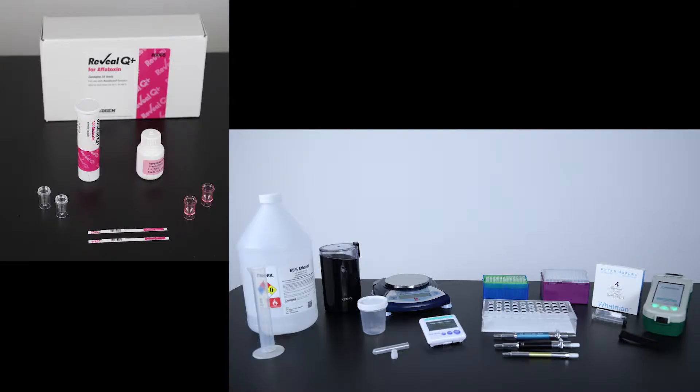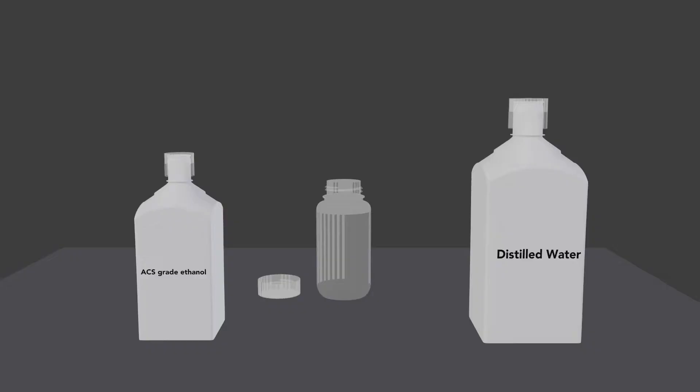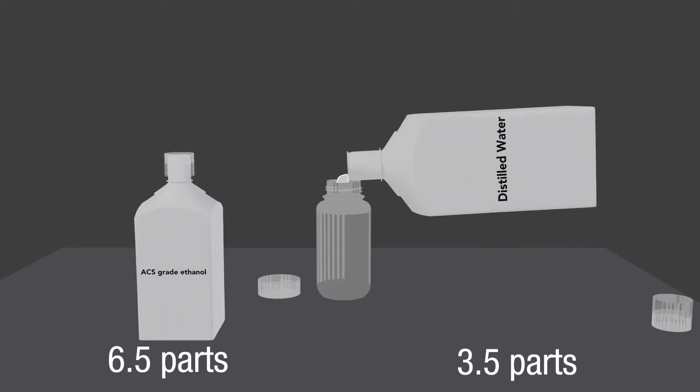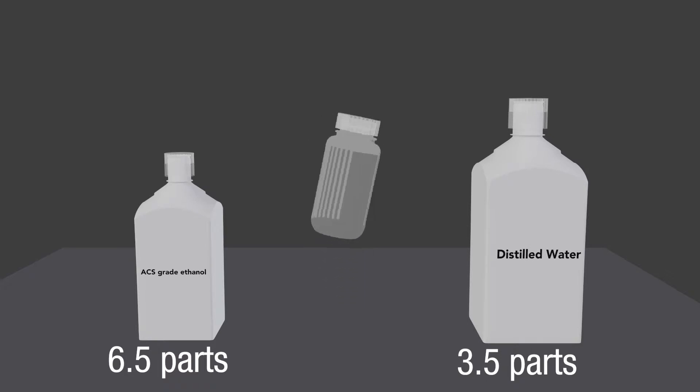To prepare the sample, begin by gathering all the materials required. If not using Neogen's prepared solution, make a 65% ethanol solution by mixing 6.5 parts ACS grade ethanol with 3.5 parts distilled or deionized water for each sample.